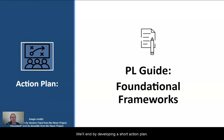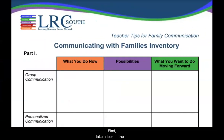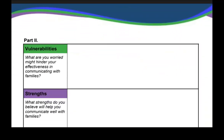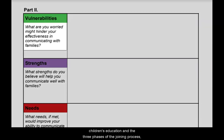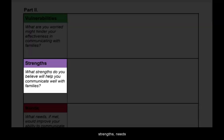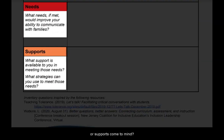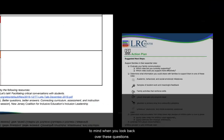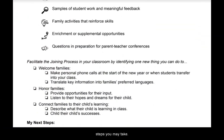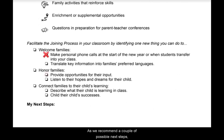We'll end by developing a short action plan. First, take a look at the Communicating with Families Inventory, Part 2. When considering the roles families play in their children's education and the three phases of the joining process, do any new vulnerabilities, strengths, needs, or supports come to mind? Feel free to pause the video to jot down any new thoughts when you look back over these questions. Use this page on your PL guide to map out the next steps you may take.